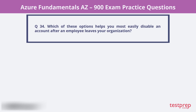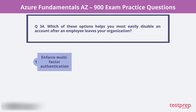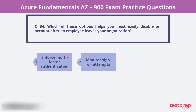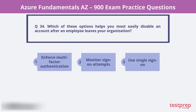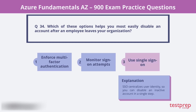Question 34. Which of these options helps you most easily disable an account after an employee leaves your organization? 1. Enforce multi-factor authentication. 2. Monitor sign-on attempts. 3. Use single sign-on. SSO centralizes user identity, so you can disable an inactive account in a single step.